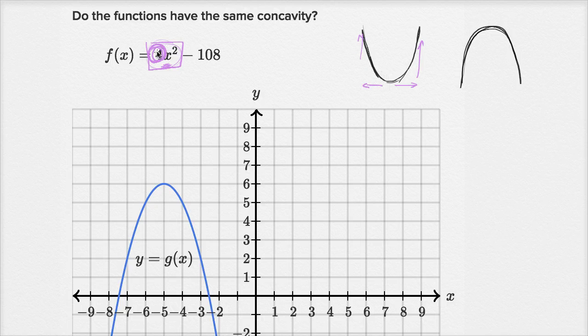And so if this is concave upwards, this one is clearly concave downwards, they do not have the same concavity. So no. If this was negative four x squared minus 108, then it would be concave downwards, and we would say yes. Anyway, hopefully you found that interesting.